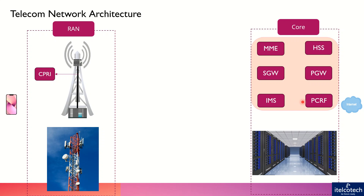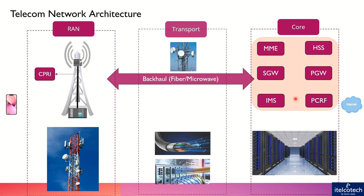There are different nodes for that — we'll talk about them in detail in the subsequent slides. In between the core network and the radio access network, we have a transport network which is also known as a backhaul, and which is further evolving with technology.